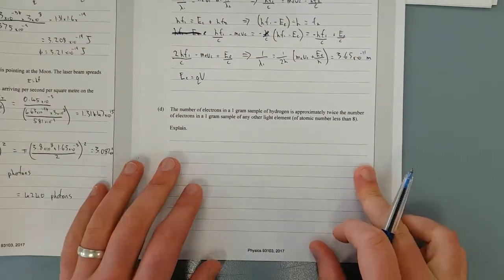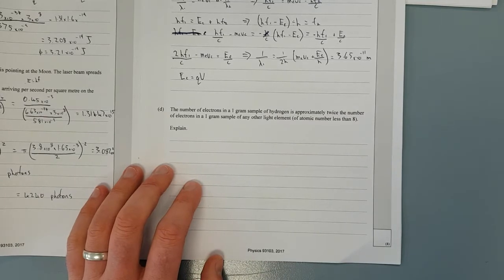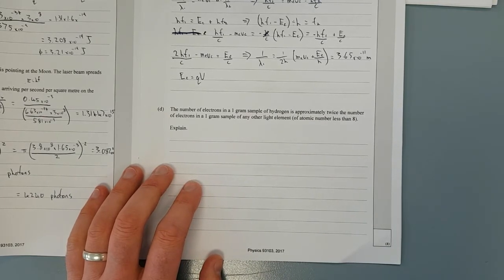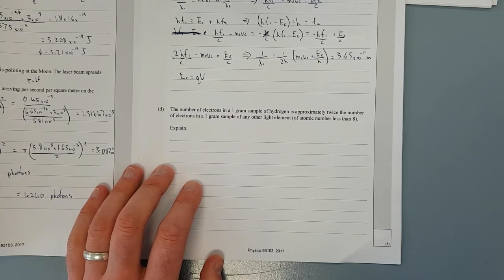Next question. The number of electrons in a one gram sample of hydrogen is approximately twice the number of electrons in a one gram sample of any other lighter element of atomic number less than eight. Explain.